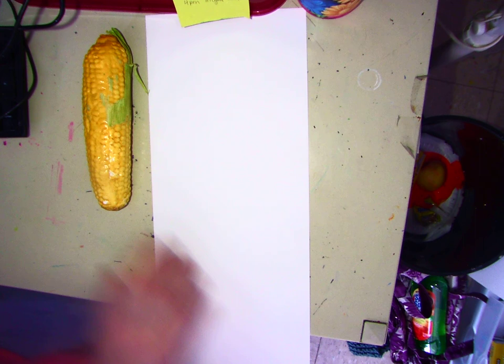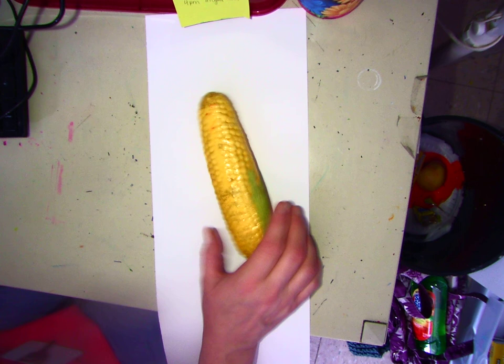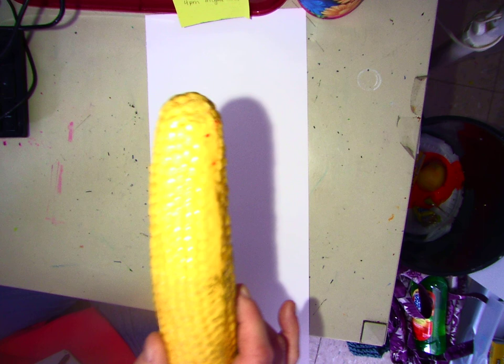So I don't know if you've ever seen Indian corn before, but it looks like this. It has the kernels of corn, like a regular cob of corn, but they're all different colors.